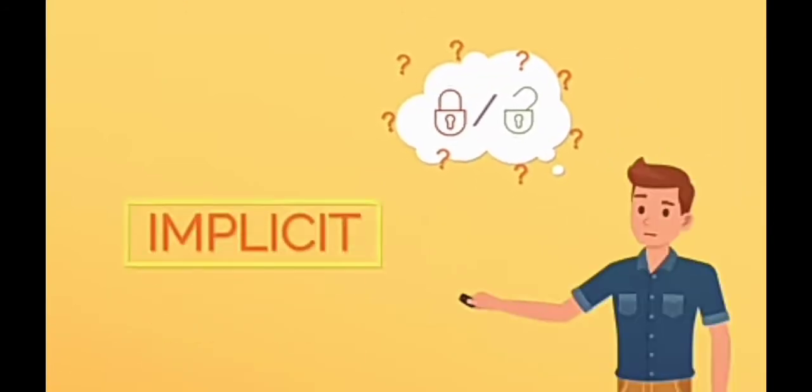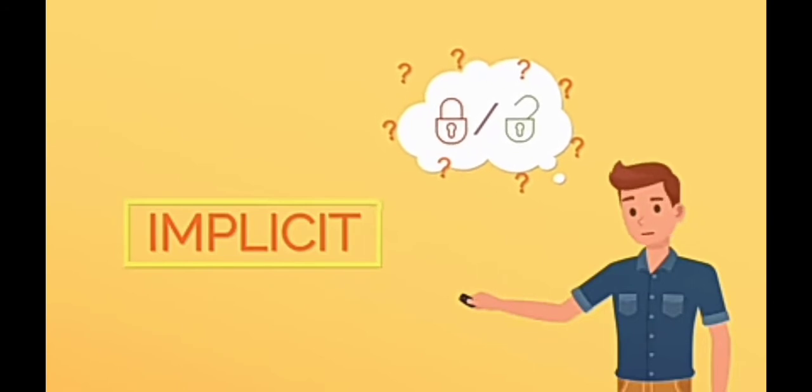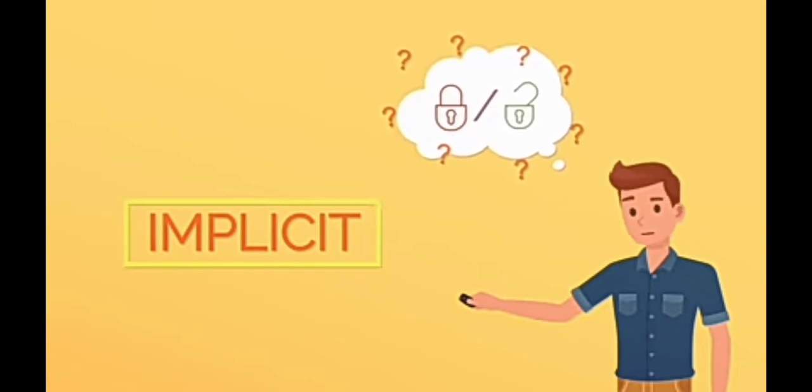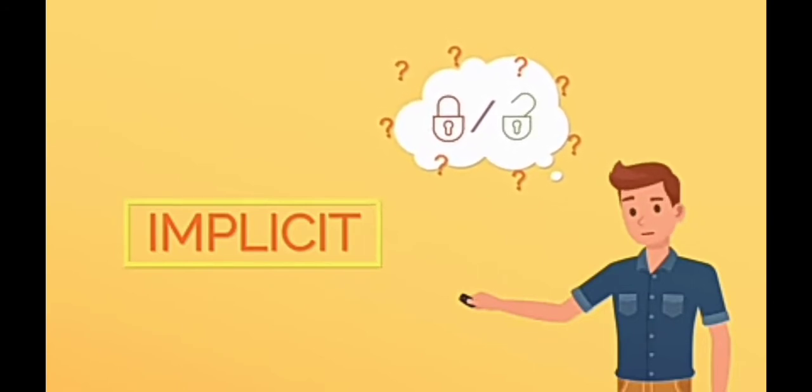Habitual activities like locking your car fall into your implicit memory. We do them so often that it doesn't make sense to store each one as a conscious thought. Since you're essentially doing it without thinking, it's hard to be 100% sure that it actually happened.